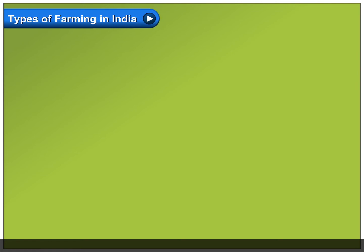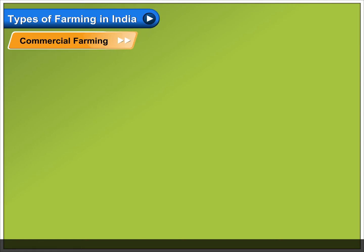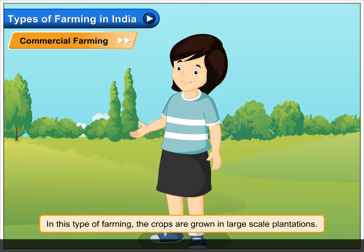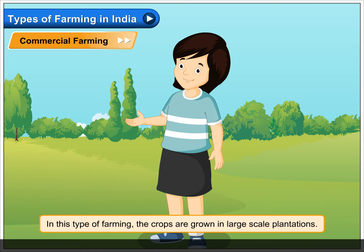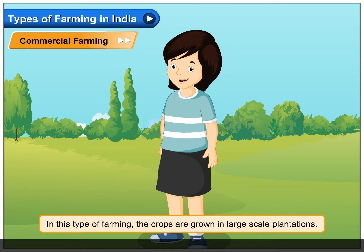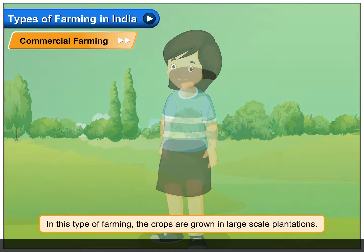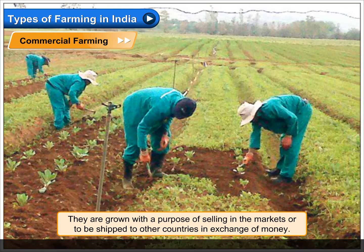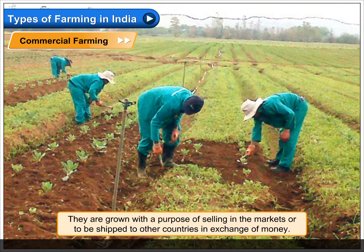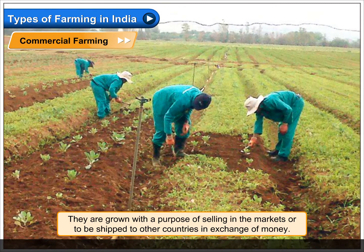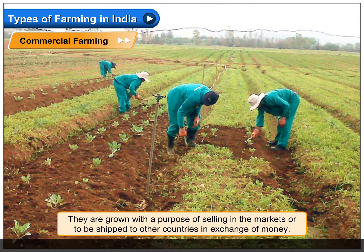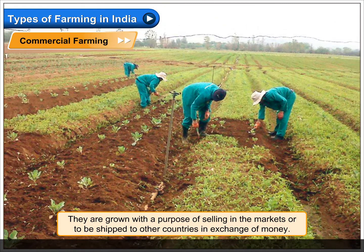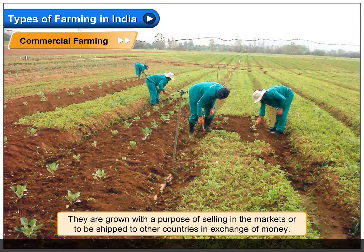Types of farming in India. Commercial farming: in this type of farming, crops are grown in large-scale plantations. They are grown with the purpose of selling in the markets or to be shipped to other countries in exchange for money.